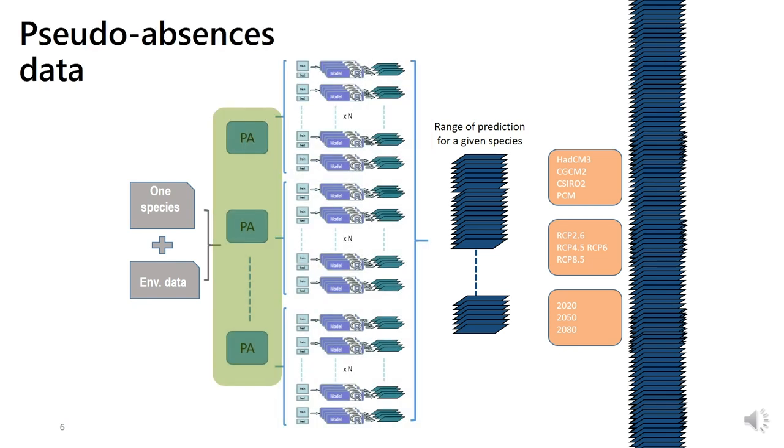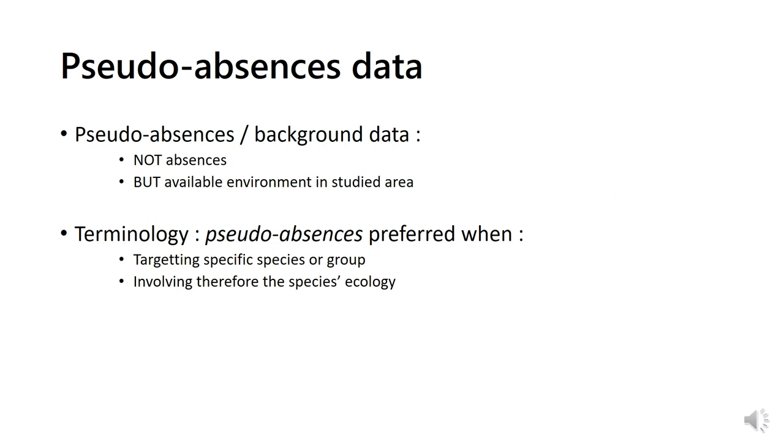So let's start with pseudo-absence data, that are needed in biomod2 when your data is presence only. Pseudo-absences, also sometimes referred as background data, should not be seen as absences, but rather the available environment in your studied area that will be combined with your presence data, on the contrary to presence only techniques. The model will contrast observed used environment against what is available.